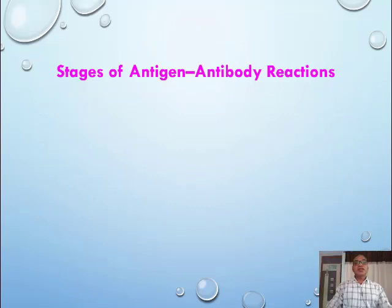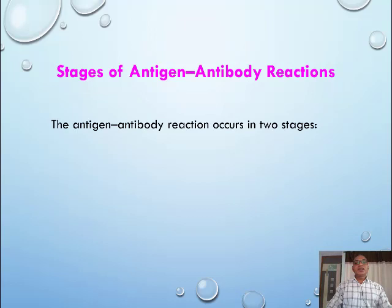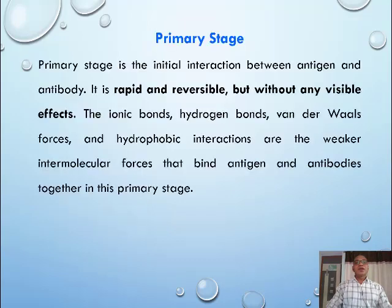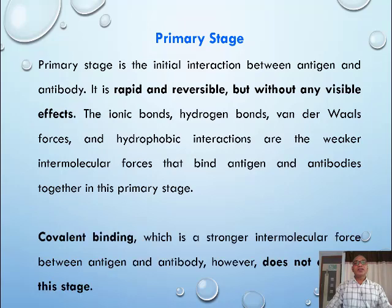Now, the stages of antigen-antibody reactions. The antigen-antibody reactions occur in two different stages: first, primary; and second, secondary. Primary stage is the initial interaction between antigen and antibody. It is rapid and reversible but without any visible effects. The ionic bonds, hydrogen bonds, van der Waals forces, and hydrophobic interactions are the weaker intermolecular forces that bind antigens and antibodies together in the primary stage.